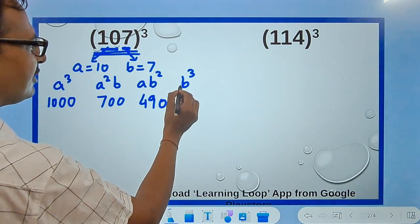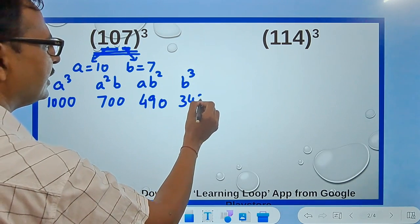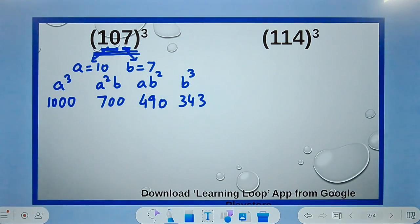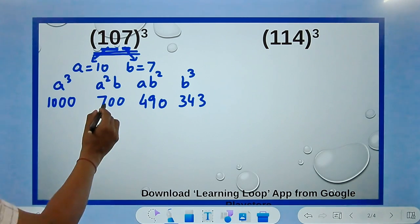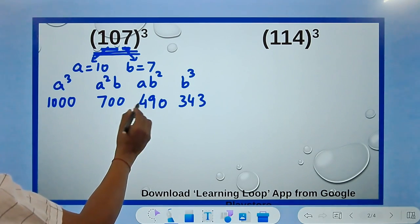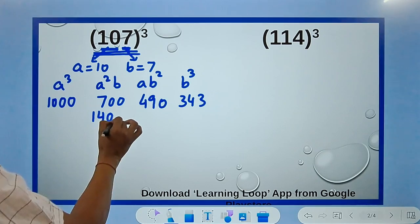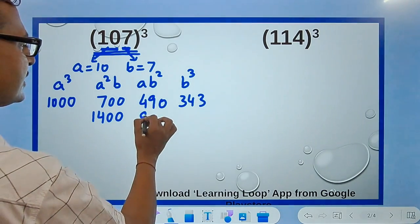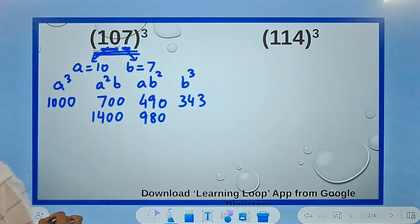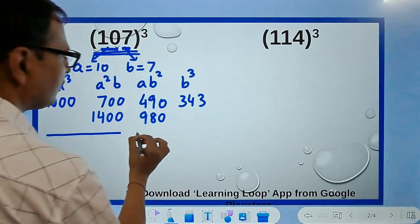Once you write these four numbers, half the job is done. The remaining half will be done when you write the double of the center two numbers below them. So 700 becomes 1400 like this, and 490 becomes 980 like this. Now just put a horizontal line.